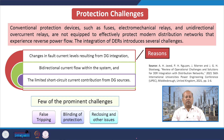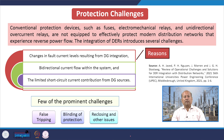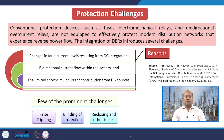Regarding protection challenges: conventional protection devices such as fuses, electromechanical relays and unidirectional over-current relays are not equipped to effectively protect modern distribution networks that experience reverse power flow. The integration of DER introduces changes in current levels resulting from DG integration, bi-directional current flow within the system, and limited short circuit current contribution from DG resources. Common prominent challenges due to renewable integration include false tripping, blinding of protection mechanism, and reclosing issues.